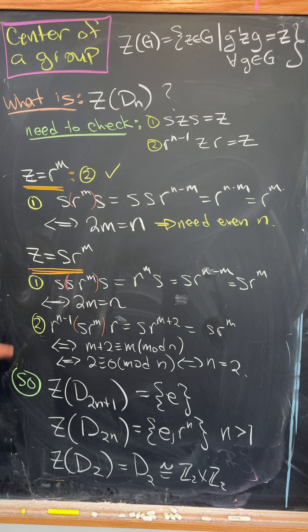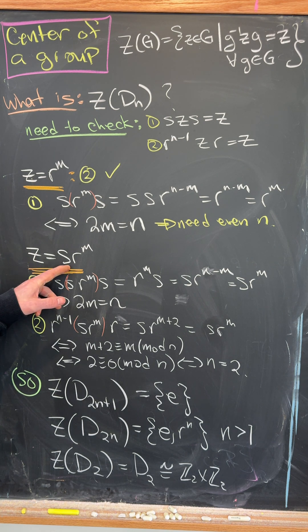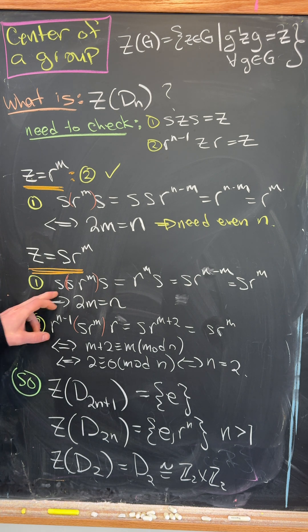Just by a simple calculation. So now let's assume that we've got a central element that's a reflection of the form SR to the M. So let's observe that to commute with S, we have the same condition that we had above.